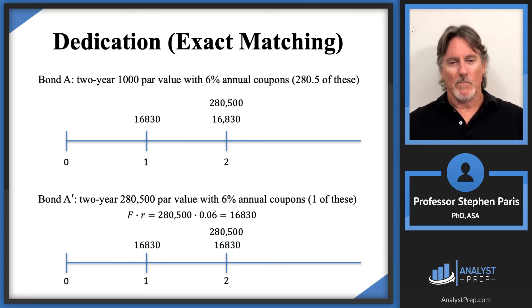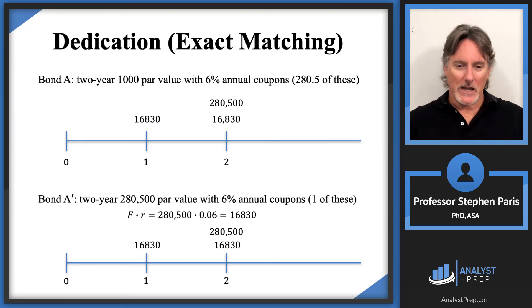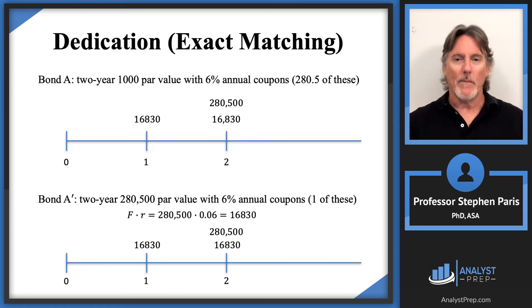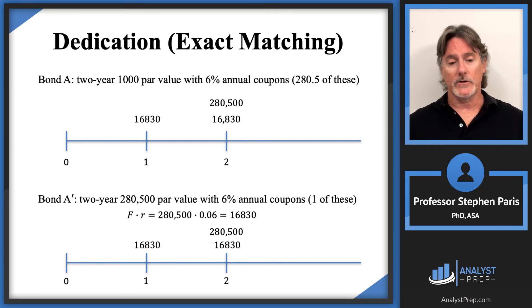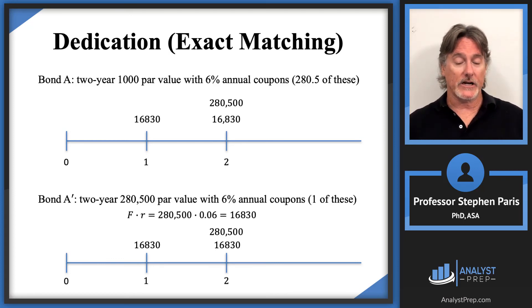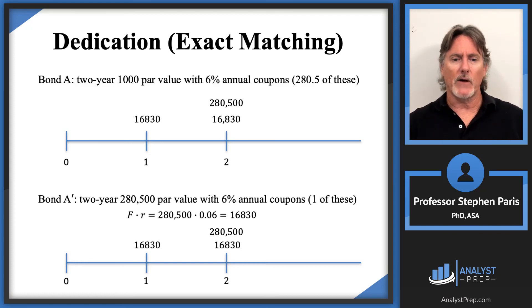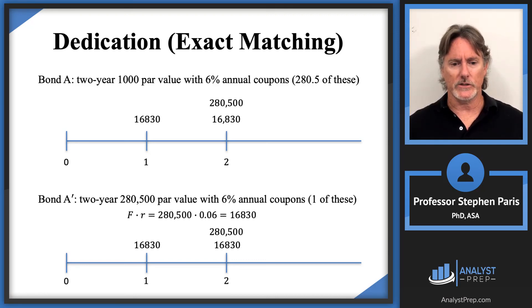So mathematically there's no difference between buying 280.5 Bond A's and buying one Bond A-prime with a $280,500 face value. This is a technique I'll use in future videos: instead of assuming a $1,000 face value bond and buying a fractional number, I'll just say 'buy one bond with face amount equal to the required value' and let capital F be that face amount.